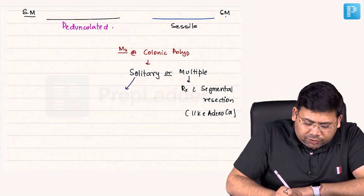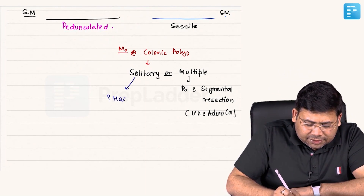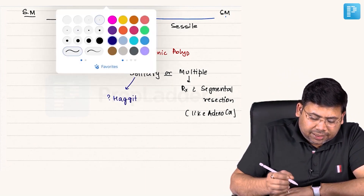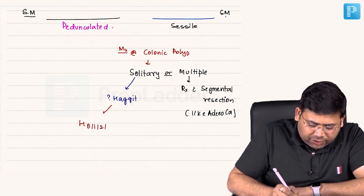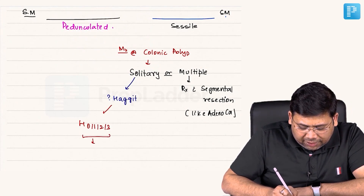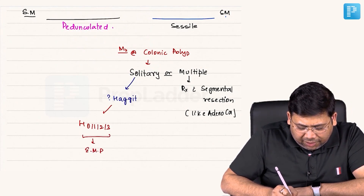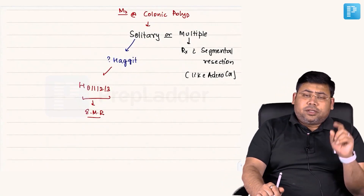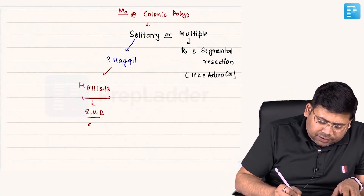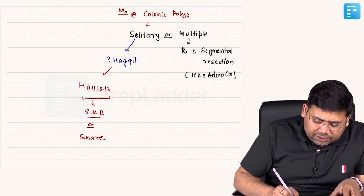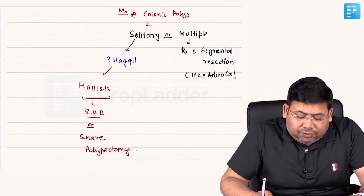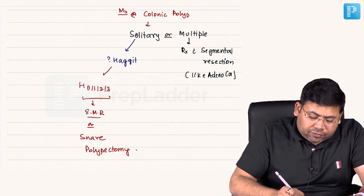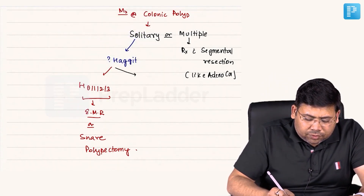If it is a solitary polyp, you need to know the Haggitt level. If it is Haggitt H0, H1, H2, or H3, the management is EMR — endoscopic mucosal resection. Sometimes the term snare polypectomy is used instead.